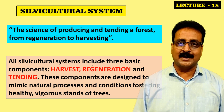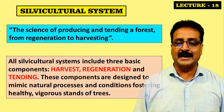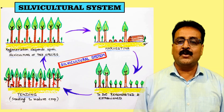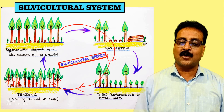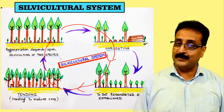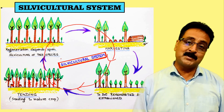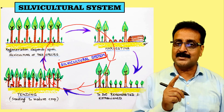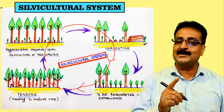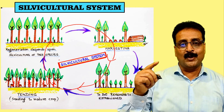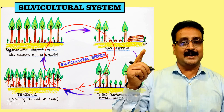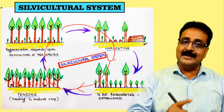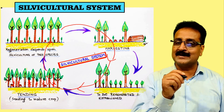The silviculture system concentrates on harvesting, regeneration, and tending. This cycle applies to all silviculture systems but differs for different species, because species demand different light conditions for regeneration. Shorea robusta is a shade bearer in the seedling stage, but as it grows into a pole and a mature tree it keeps on demanding light. So it is a light demander in the mature stage but a shade bearer in the sapling or seedling stage.